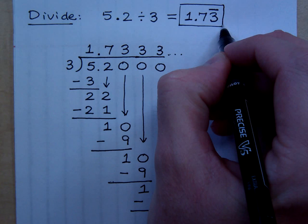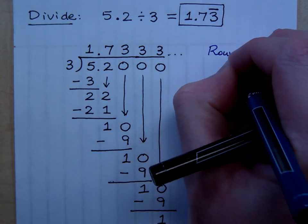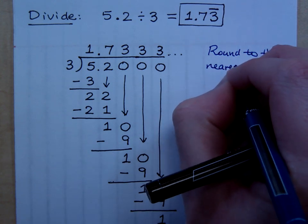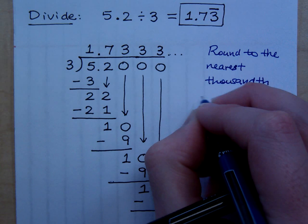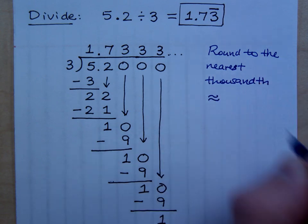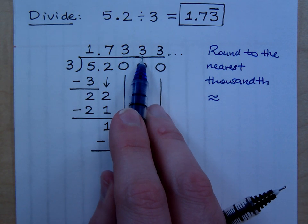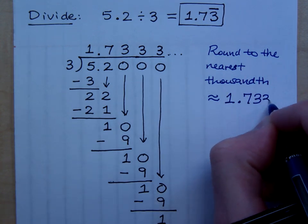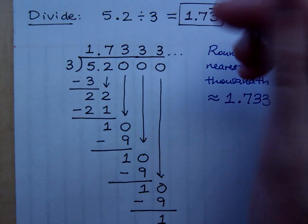So, this is what the exact answer would be. But again, a lot of times you see the book or an assessment will say round. Round to the nearest thousandth. So, if I round to the nearest thousandth, what would it be? Here's your thousandth spot. Does it stay the same or does it go up? It stays the same. So, it would be 1.733. But again, you don't round unless I tell you to round.